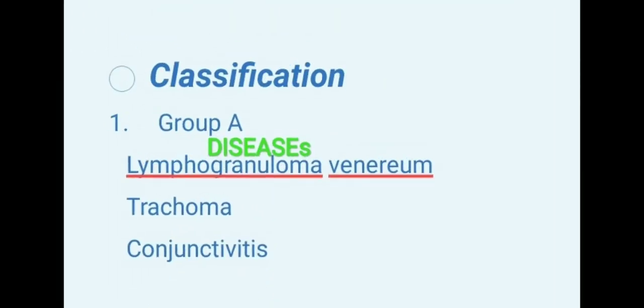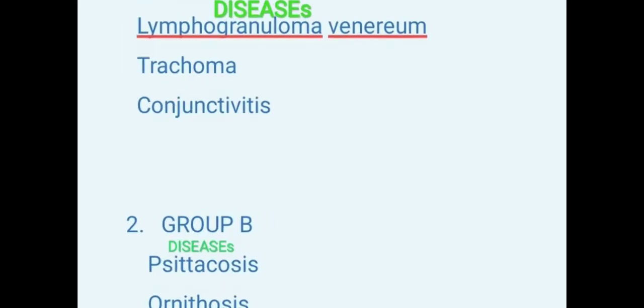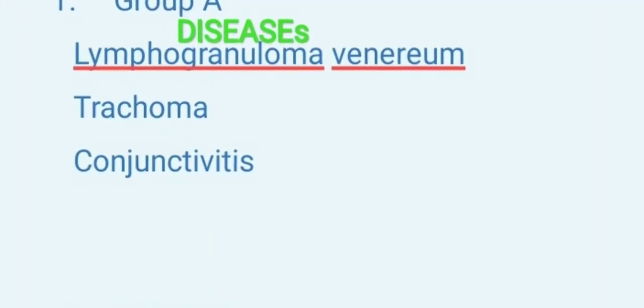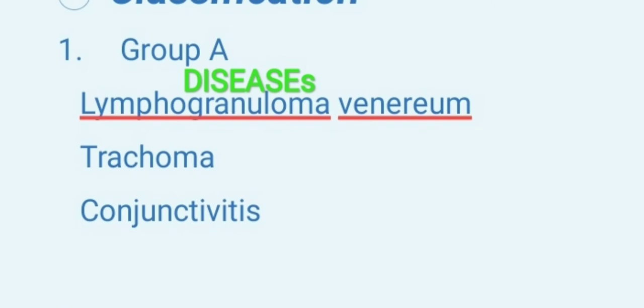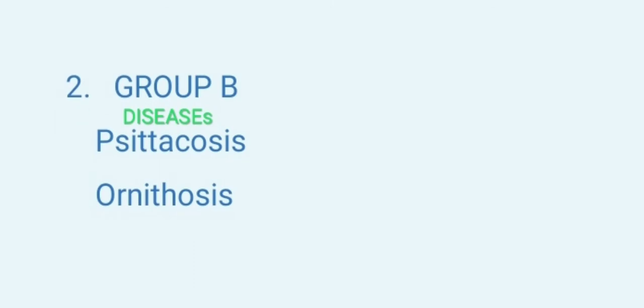The classification: Group A and Group B. Group A causes lymphogranuloma venereum, trachoma, and inclusion conjunctivitis. Group B causes psittacosis and ornithosis.